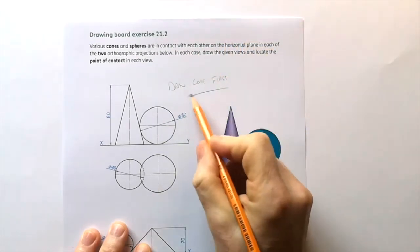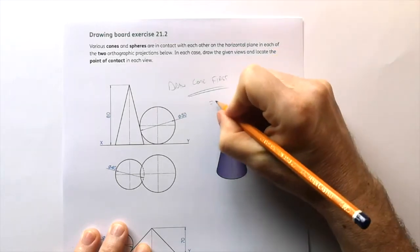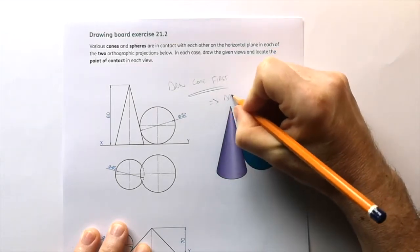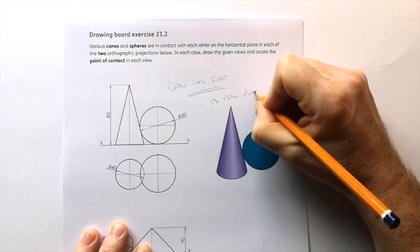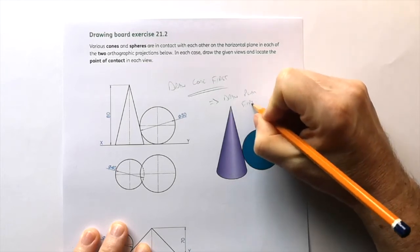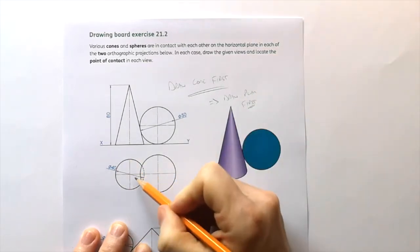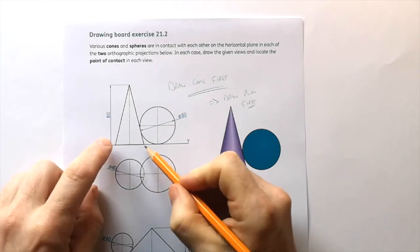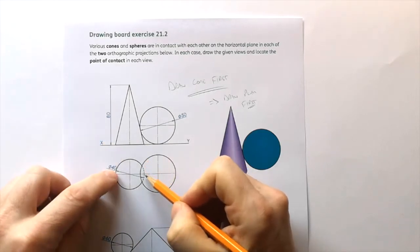So when you draw the cone first, therefore draw the plan first because it's much easier to draw a circle and project up than trying to get this accurate and project back down.